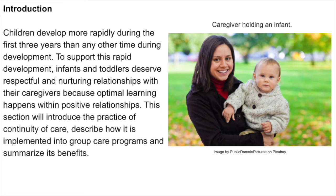Children develop more rapidly during the first three years than any other time during development. To support this rapid development, infants and toddlers deserve respectful and nurturing relationships with their caregivers, because optimal learning happens within positive relationships. This section will introduce the practice of continuity of care, describe how it is implemented into group care programs, and summarize its benefits.